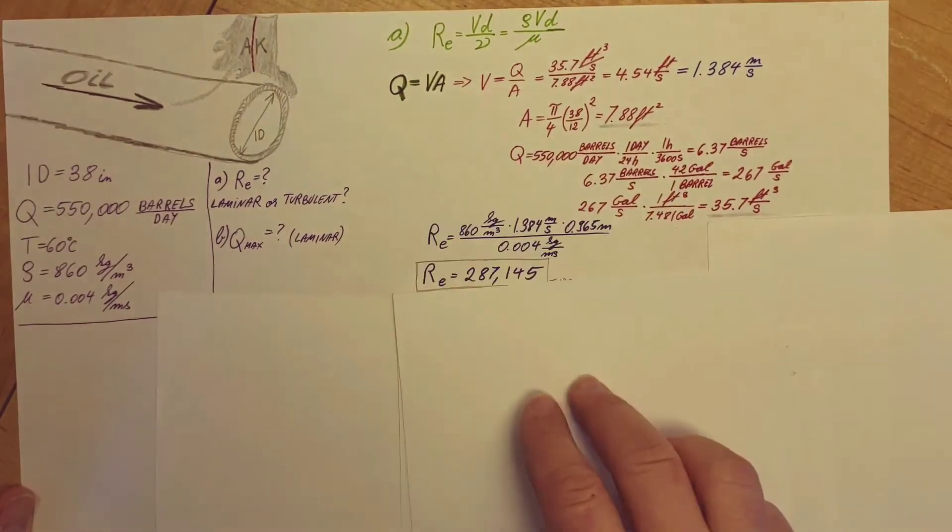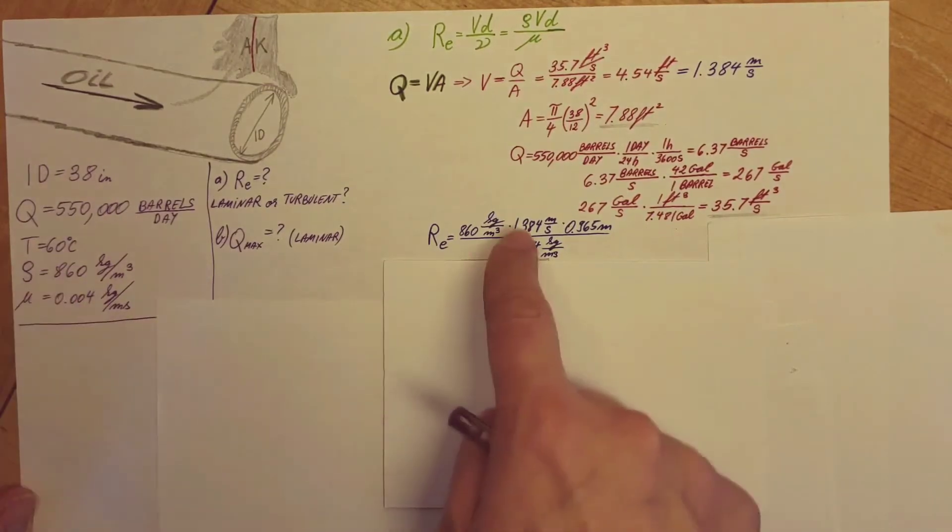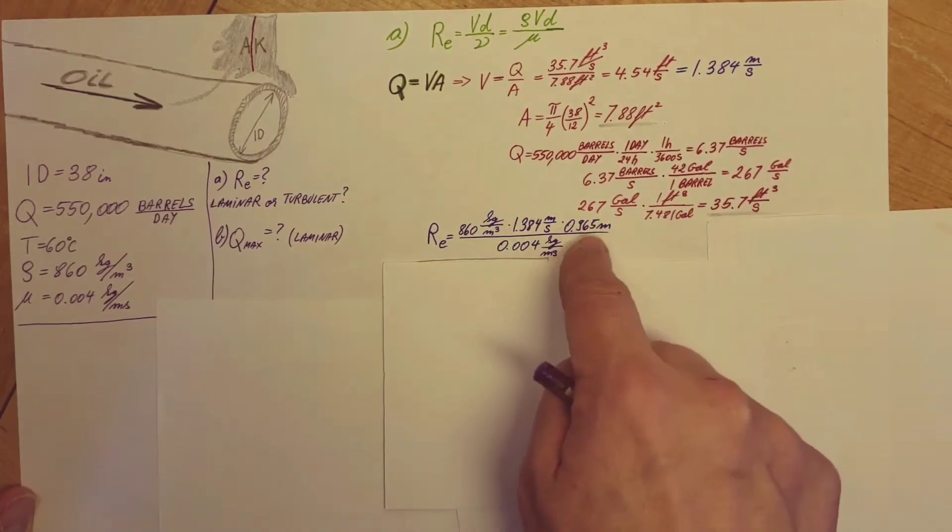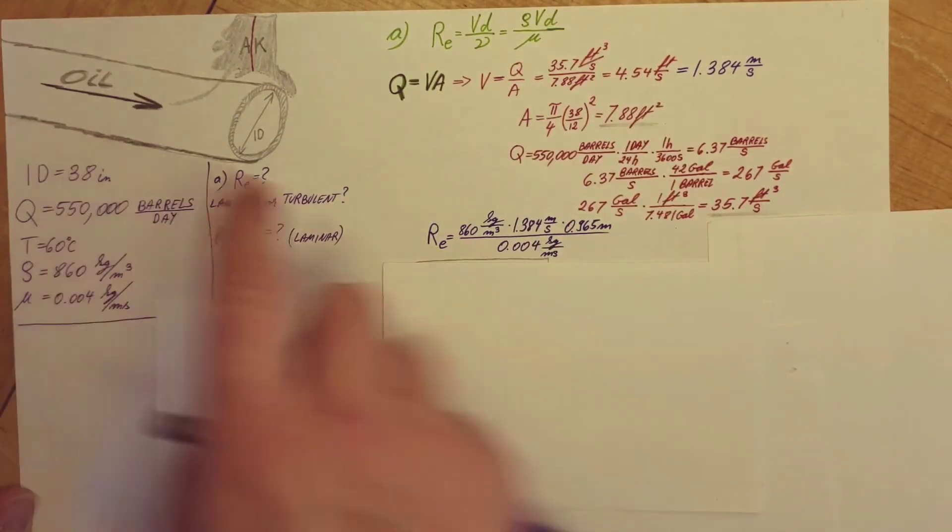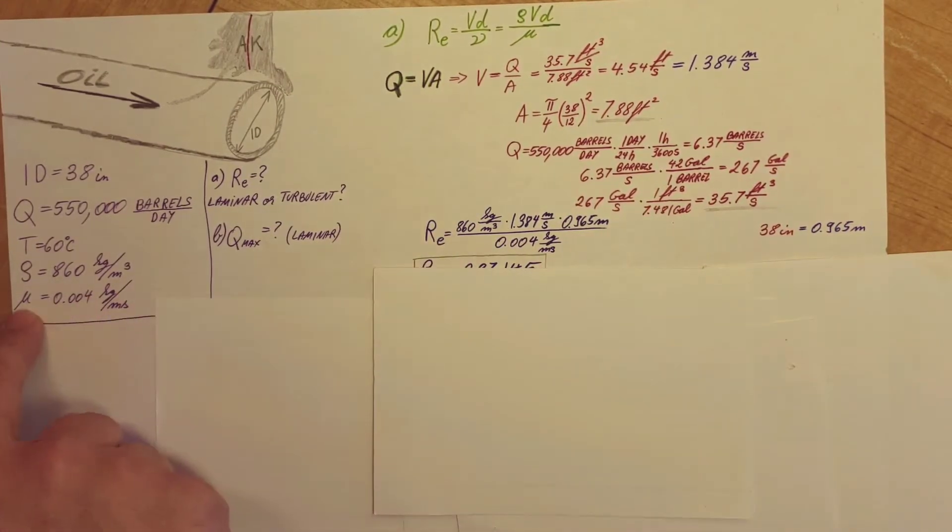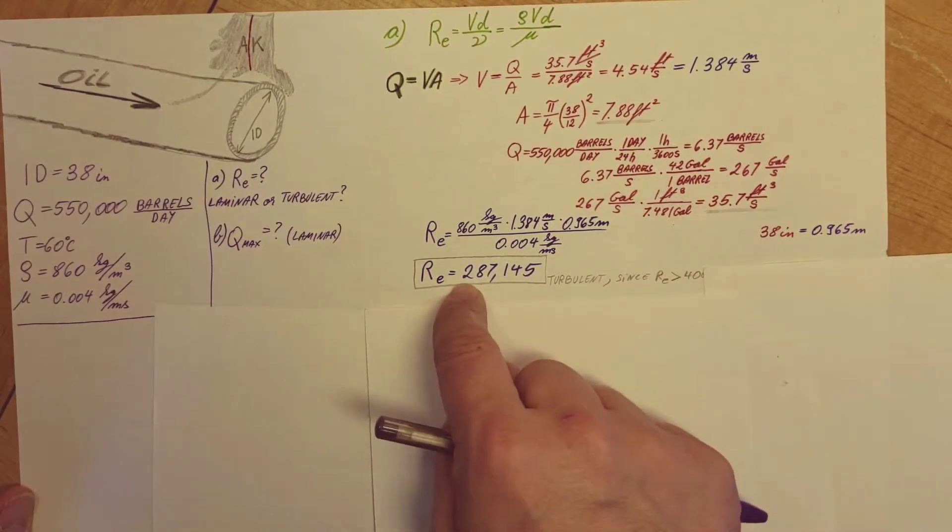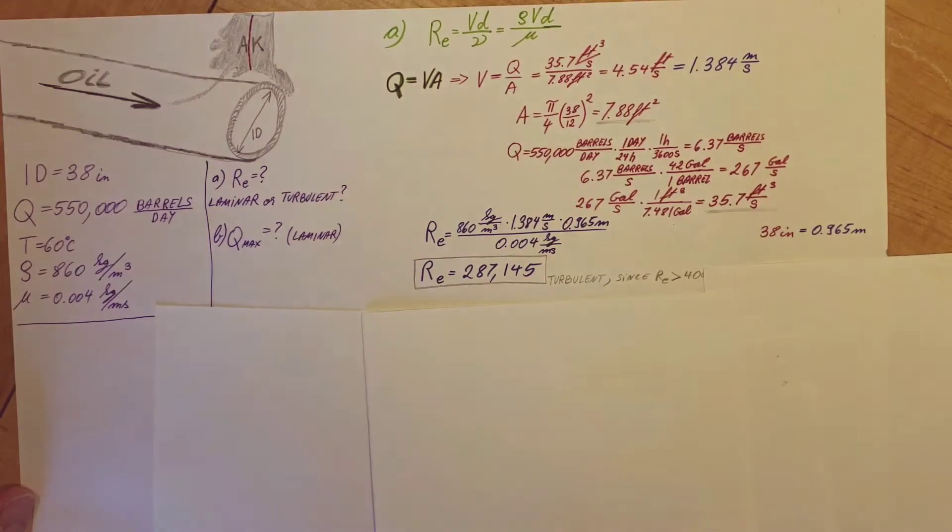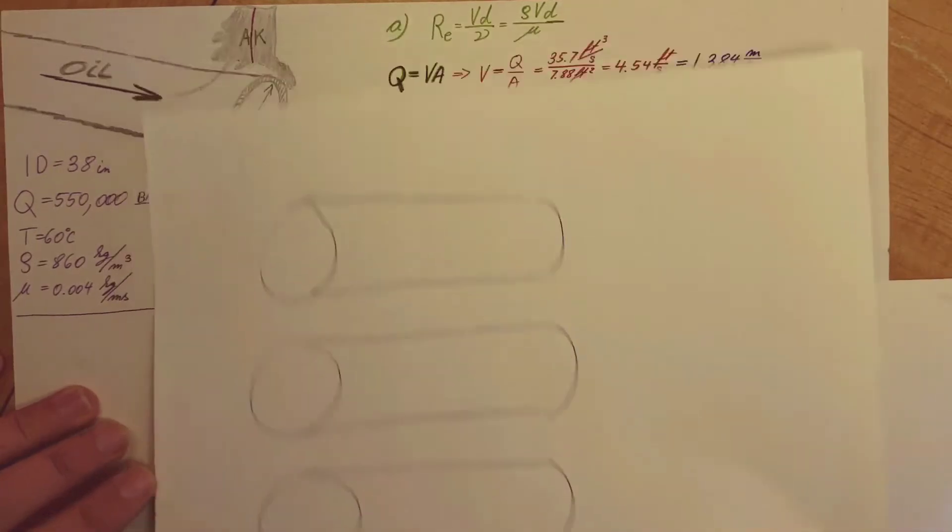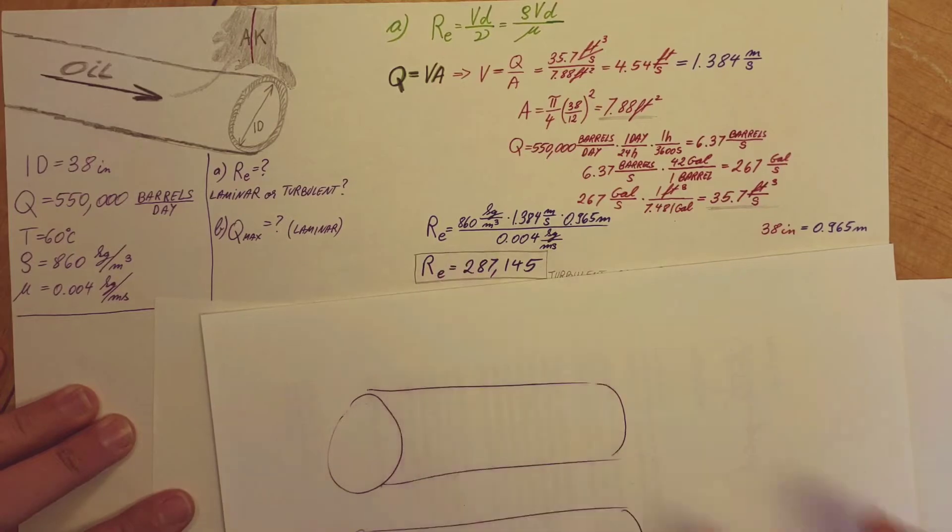We have everything for our formula, so let's plug in. Reynolds number equals 860 for our density, the velocity that we just found here in metric units to match everything else. We have the diameter, which is 38 inches, but I'm going to convert it to meters to match everything else, and our viscosity is given. Plug it in, calculate it, and we come up with a Reynolds number that is 287,145. They are also asking us whether this flow with this Reynolds number is turbulent or laminar.